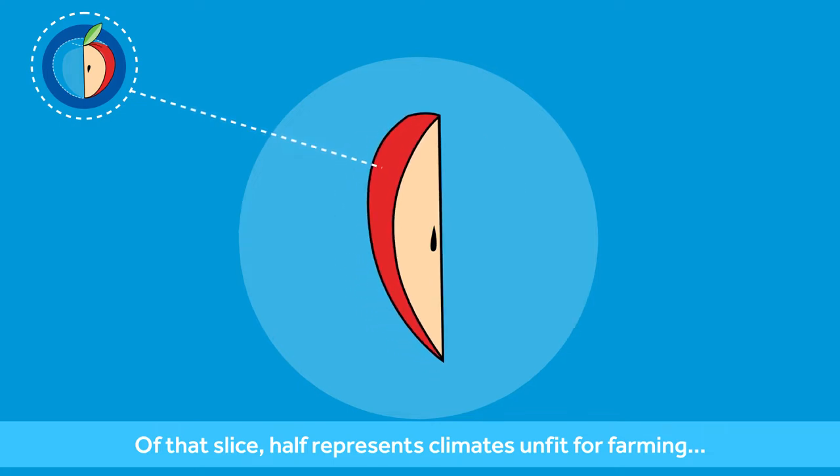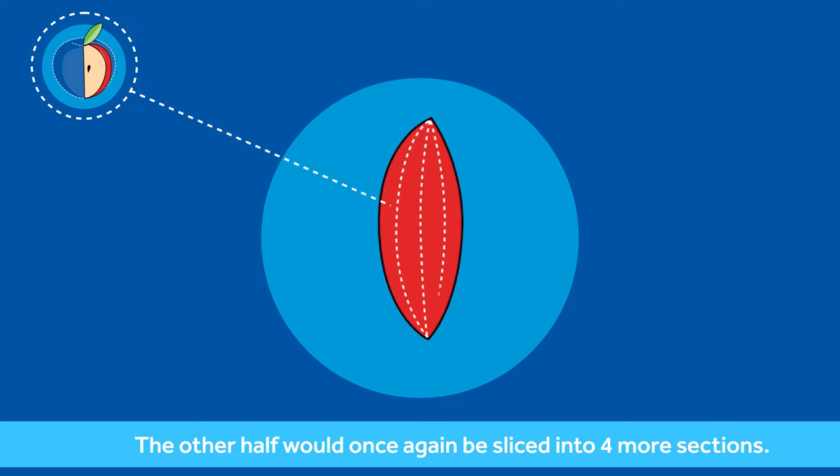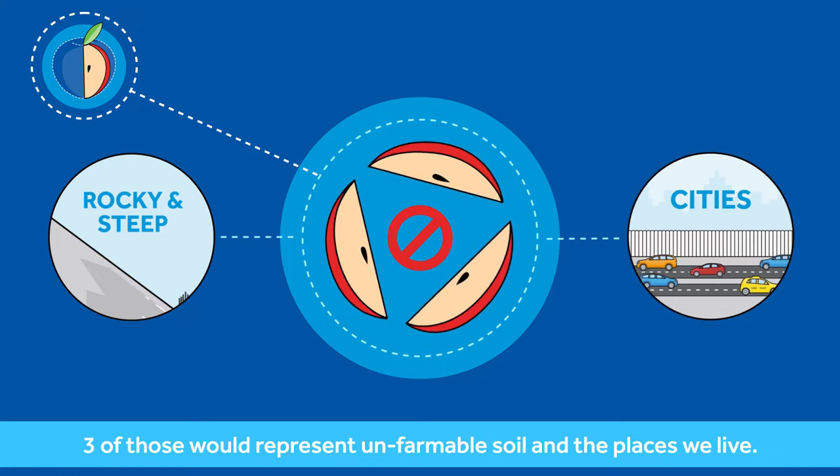Of that slice, half represents climates unfit for farming and the other half would once again be sliced into four more sections. Three of those would represent unfarmable soil and the places we live.